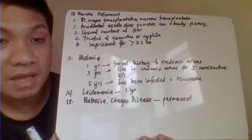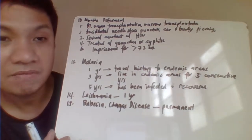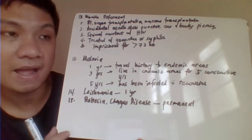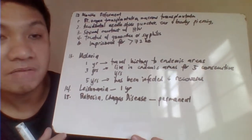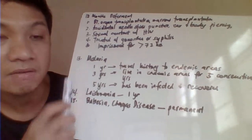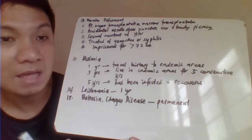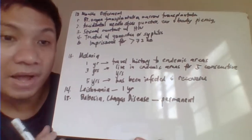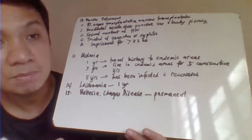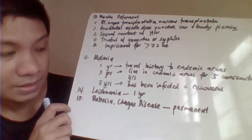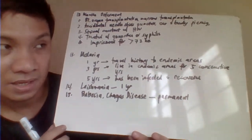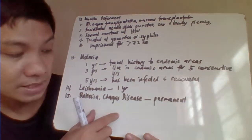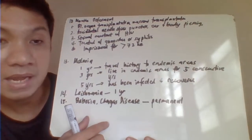For malaria: travel history to an endemic area results in a one-year deferment. Living in an endemic area for five consecutive years results in a three-year deferment, and five years if the patient has been infected and is symptom-free. Leishmaniasis has a one-year deferment. Chagas disease, trypanosomiasis, and babesia result in permanent deferment.